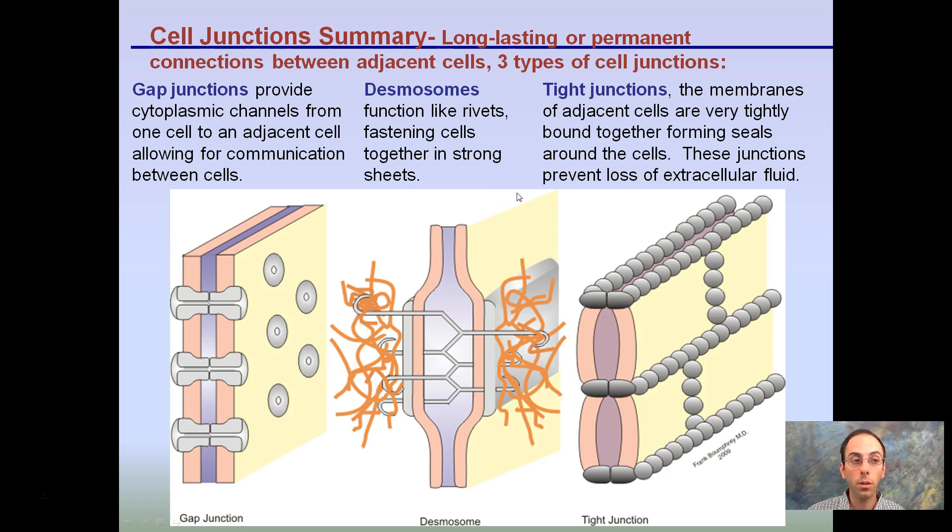That nice comparison between the three here, remember gap junctions providing the cytoplasmic channels from one cell to adjacent cells for communication. Desmosomes function like rivets, fastening cells together in strong sheets.